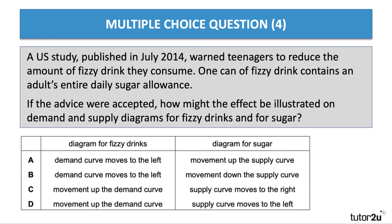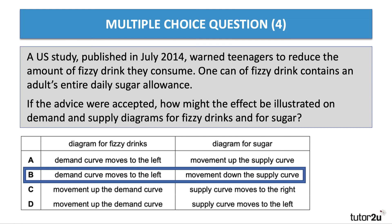Question four: a US study published in 2014 warned teenagers about reducing their consumption of fizzy drinks — one can contains an adult's entire daily sugar allowance. If the advice were accepted, how might the effect be illustrated on demand and supply diagrams for fizzy drinks and sugar? This is an example of an information intervention impacting on the price mechanism. The answer is B — with better information, you'd expect the demand curve for fizzy drinks to shift to the left, causing a contraction in output or a movement down the supply curve.